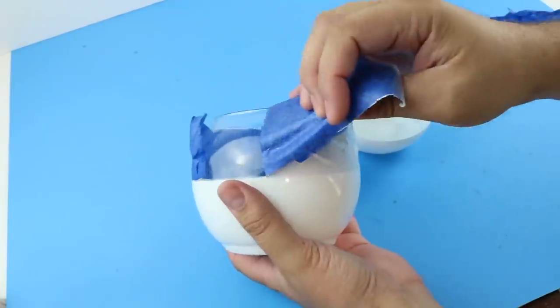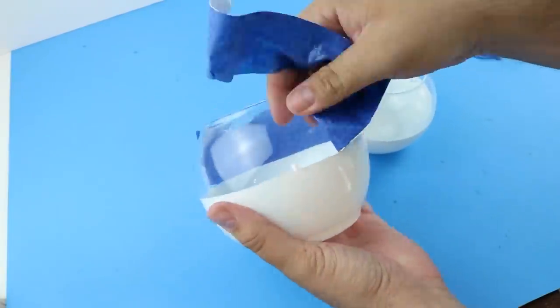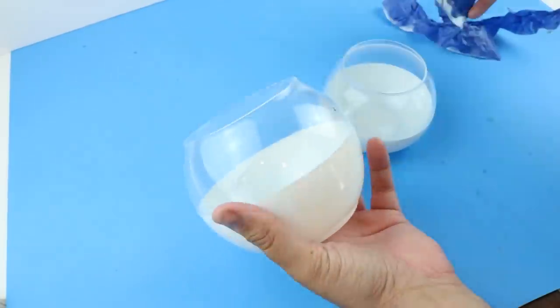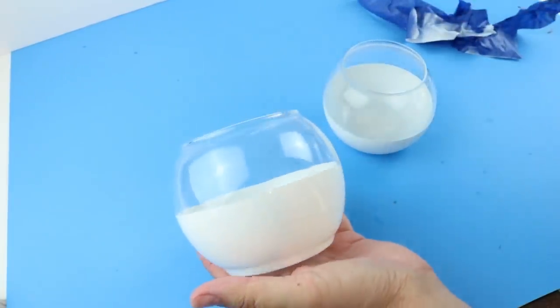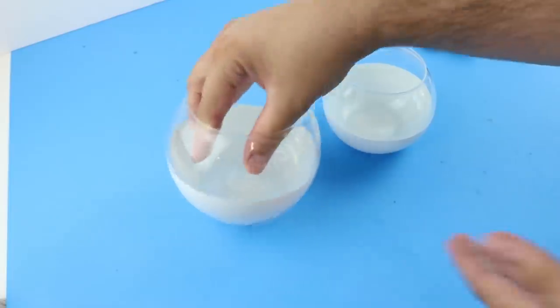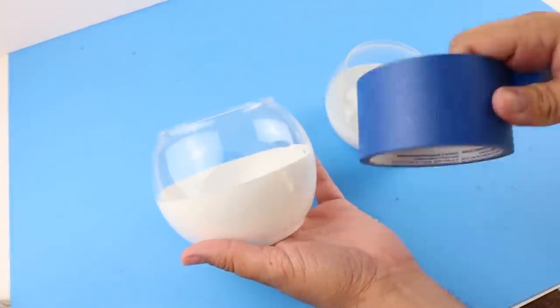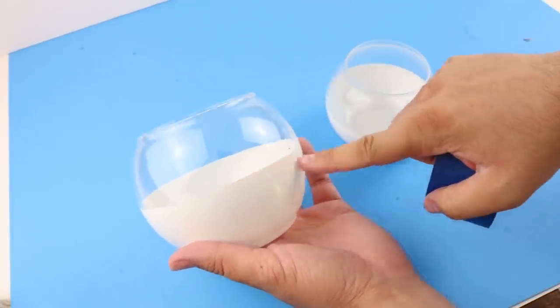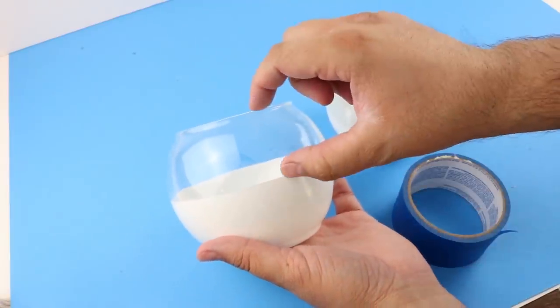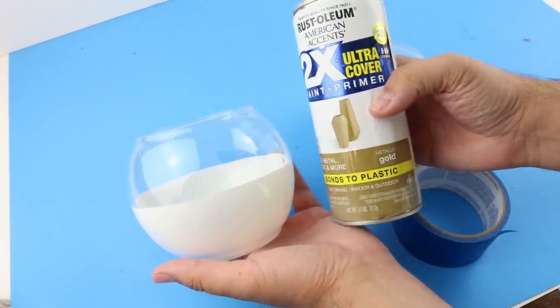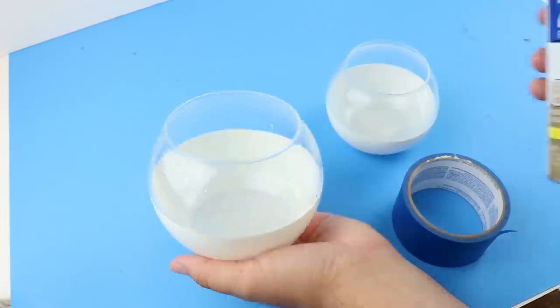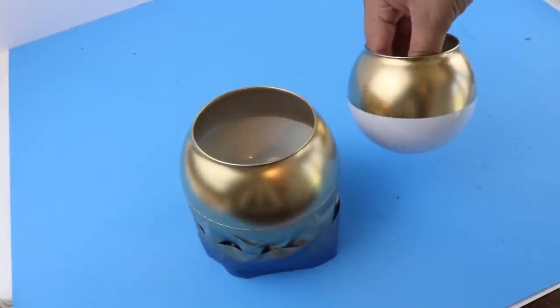I used Krylon gloss white spray paint to do that, and then we're going to tape the white part off and spray the top with a gold spray paint from Rust-Oleum. Now you do want to make sure you give this time, so maybe give it an hour to dry. That way when you put the tape on and peel it off it doesn't remove that white paint, and then that way we can get those two separate colors.